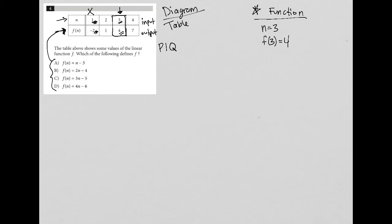Let's try answer choice A. Answer choice A would say f of n. So instead of f of n, I'm going to say f of three again, because I'm dealing with this column here. f of three is equal to three minus three again, because n is three. And because I know that f of three should equal four, I can say, well, four does not equal three minus three, which is zero. And therefore answer choice A is gone.